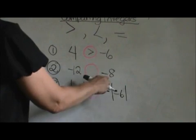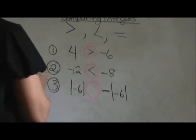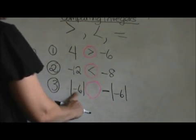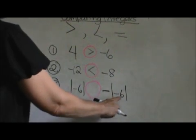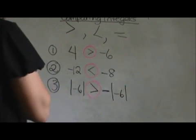Negative 12 comparing to negative 8. Negative 8 is larger so we are going to use a less than symbol. Absolute value of negative 6 compared to the negative absolute value of negative 6. And that is also a greater than symbol.